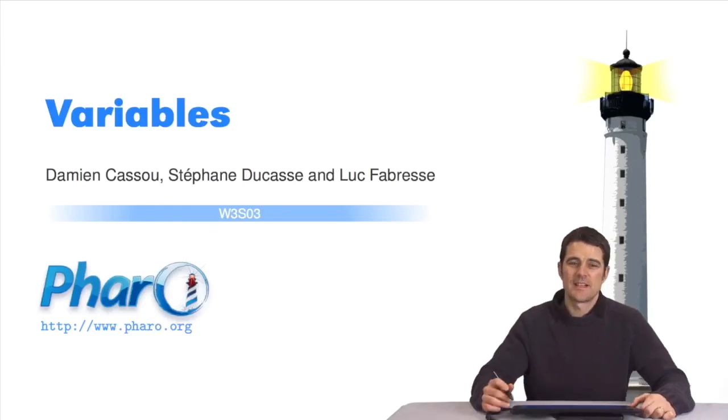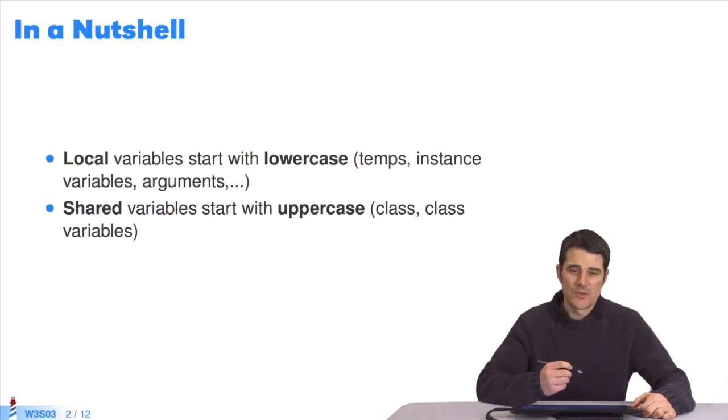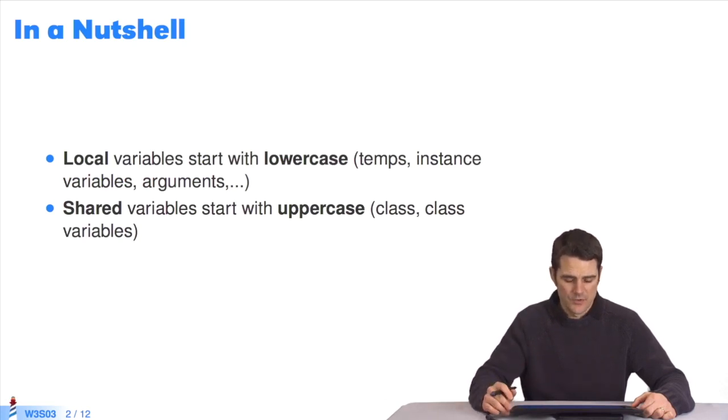Hello. Today we will learn about variables and the types available in Faro. In fact, there are two big types. Local variables always start with lowercase by convention. We will see the local types available. The second big group is shared variables. They start with uppercase by convention. There are also several types.